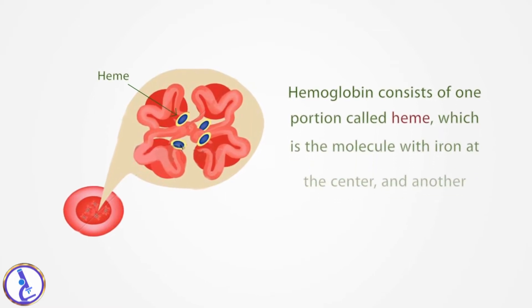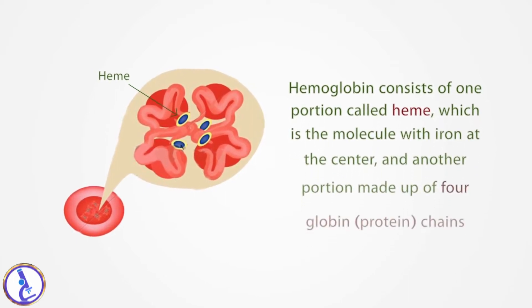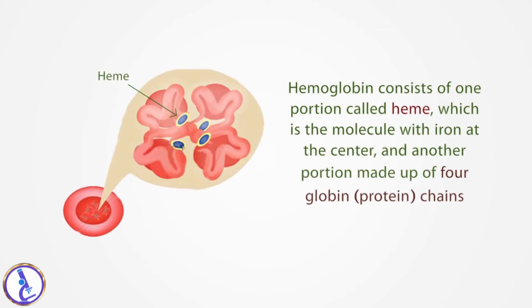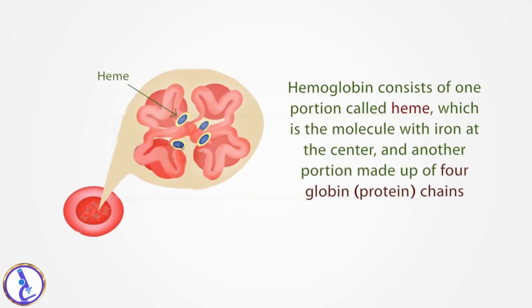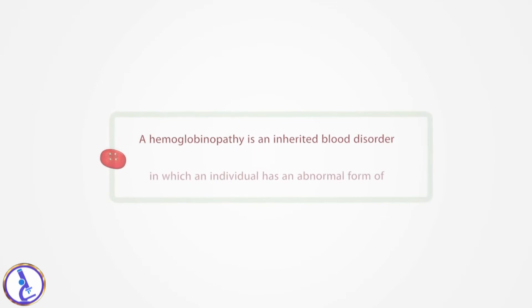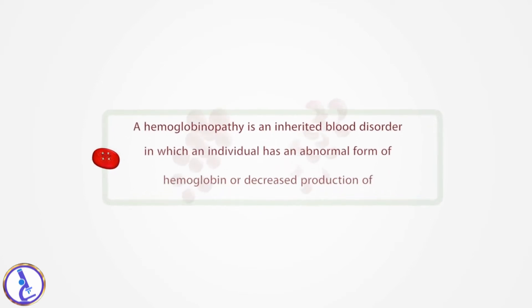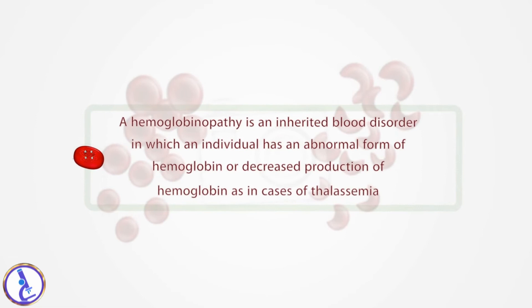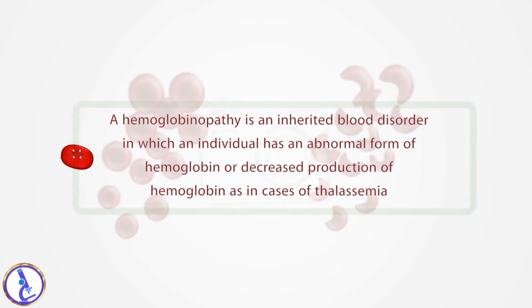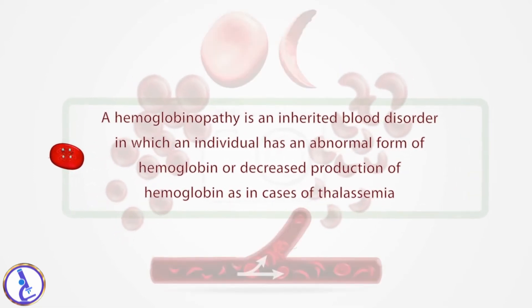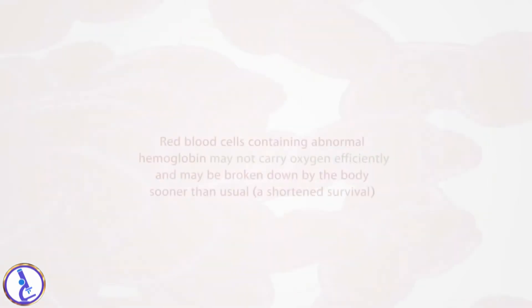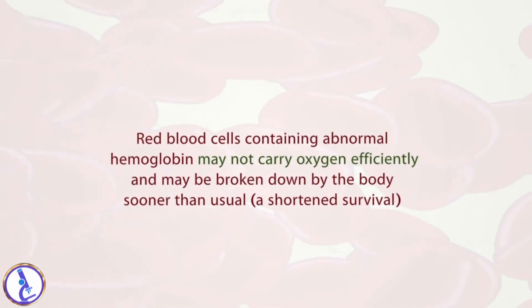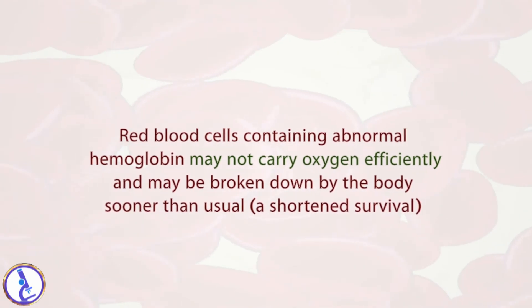Hemoglobin consists of one portion called heme, which is the molecule with iron at the center, and another portion made up of four globin protein chains. A hemoglobinopathy is an inherited blood disorder in which an individual has an abnormal form of hemoglobin or decreased production of hemoglobin, as in cases of thalassemia.